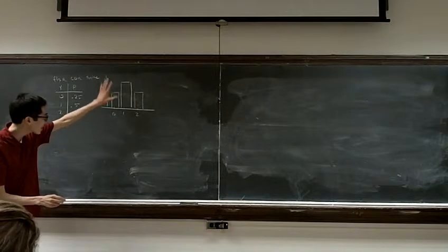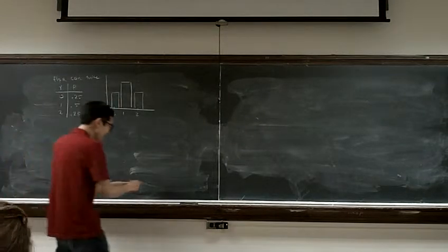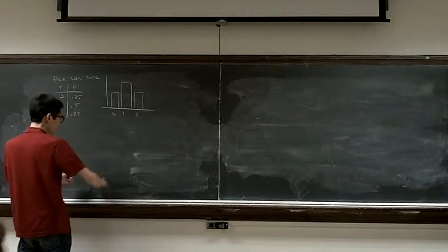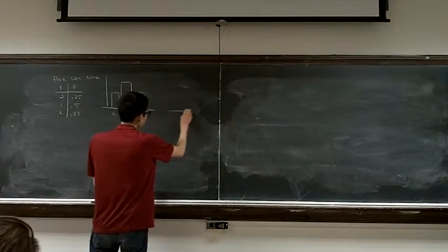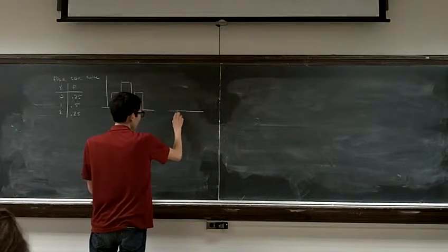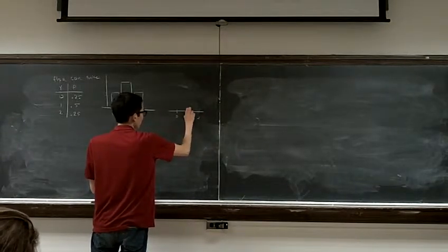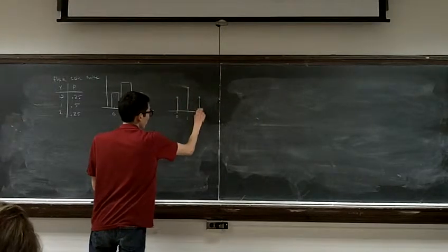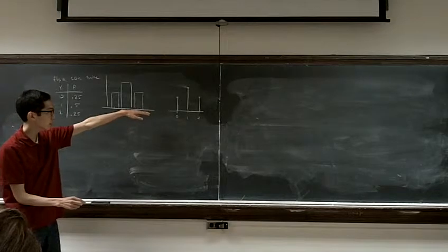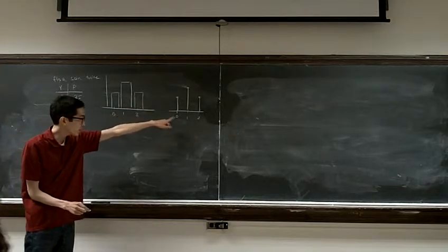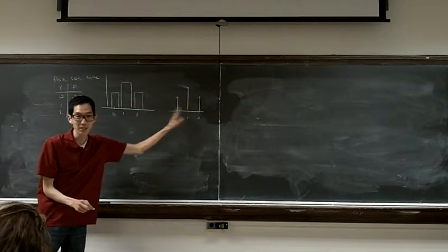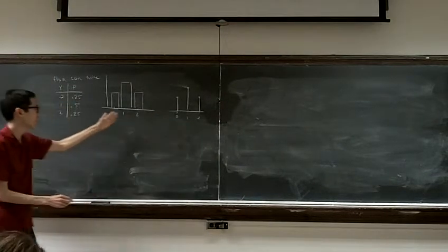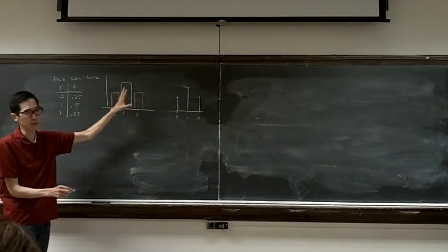There's spaces in between the bars, that doesn't matter. Technically, because it's a discrete distribution, it looks like this. Because you can only get 0, 1, or 2. You can't get anything in between. You can't get one and a half heads or 1.7 heads. So whether I put spaces in between the bars or not, there's not really anything in between.